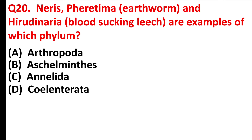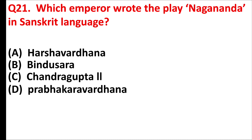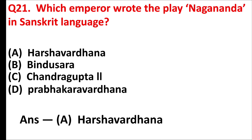Neris, Pheretima (earthworm), and Hirudinaria (blood-sucking leech) are examples of which phylum? Answer is option C: Annelida. Which emperor wrote the play Nagananda in Sanskrit language? Answer is option A: Harshavardhana.